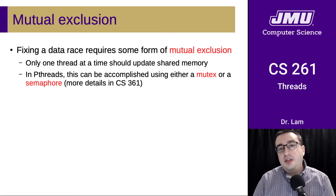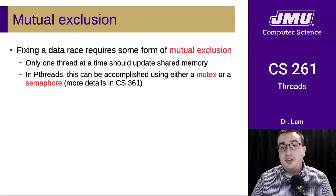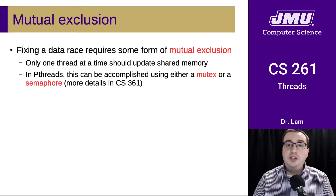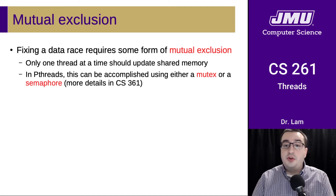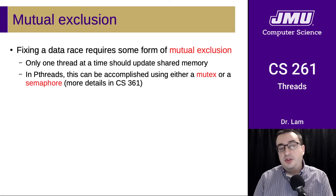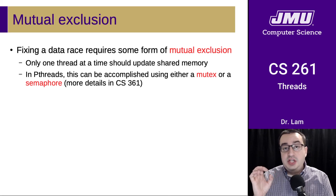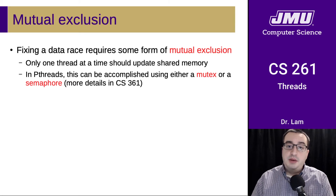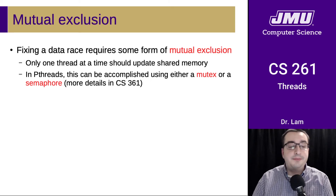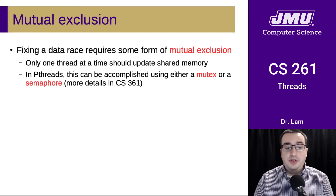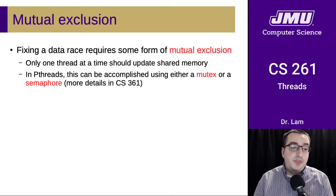Fixing these problems — in particular, fixing a data race — requires some form of mutual exclusion. Only one thread should be able to access a memory location or region of code until it's done, at which point another thread can proceed. We want to mark that region of foo where we read the value of X, change it in the register, and save it back to memory, so it all happens at one time — sometimes called being done atomically. In pthreads or POSIX threads, this can be accomplished using a mutex, short for mutual exclusion. Some folks call this a lock.